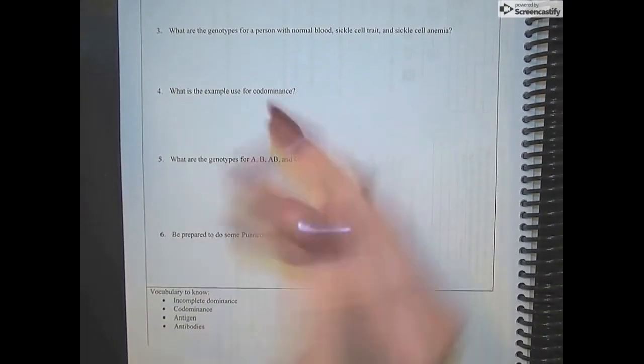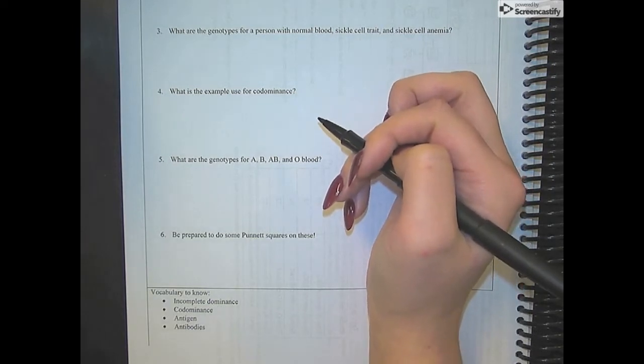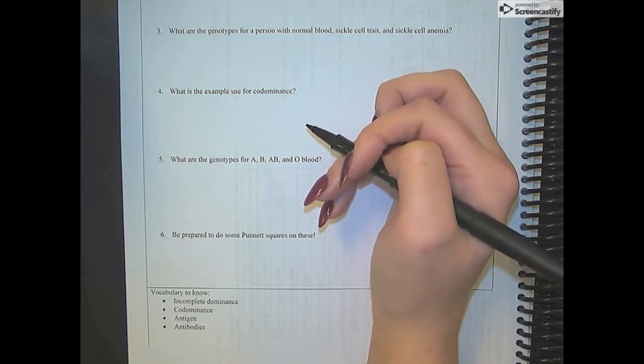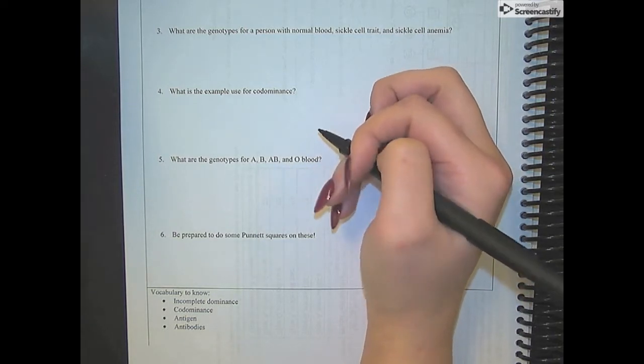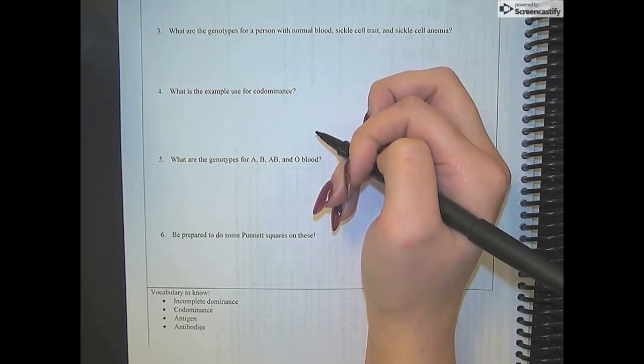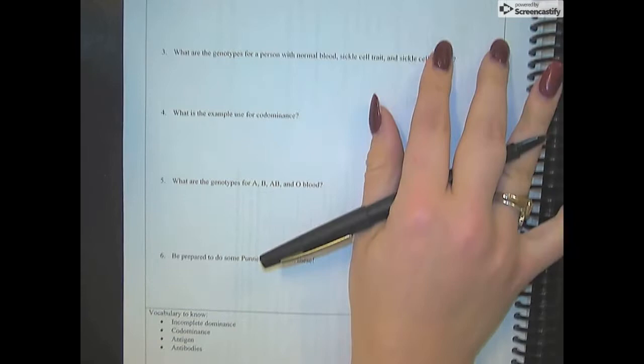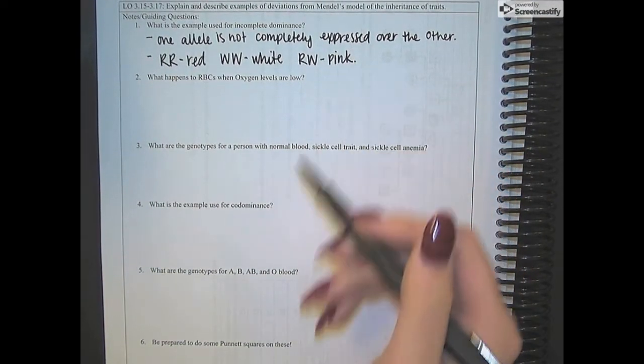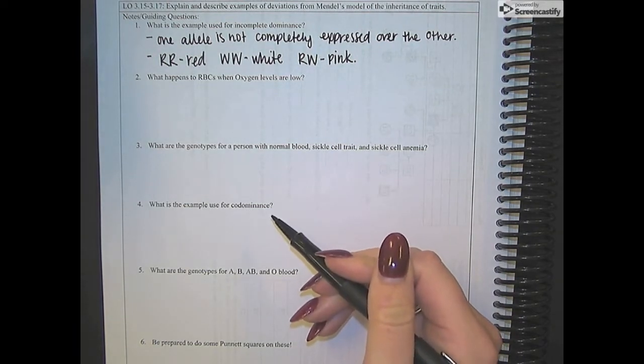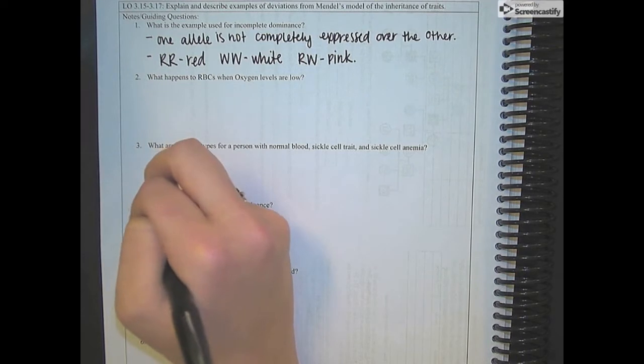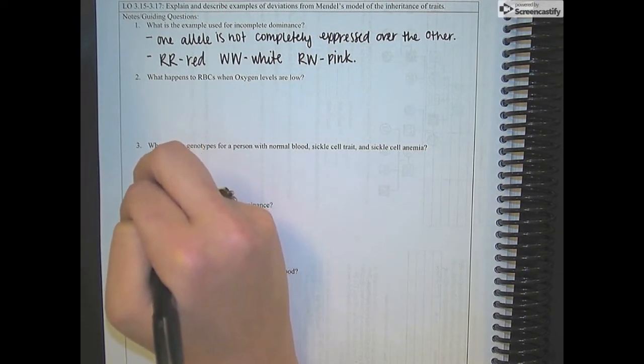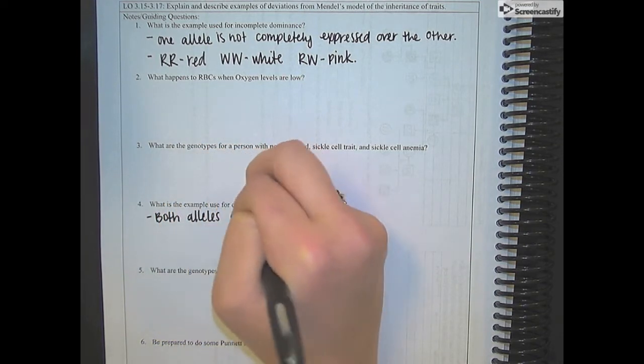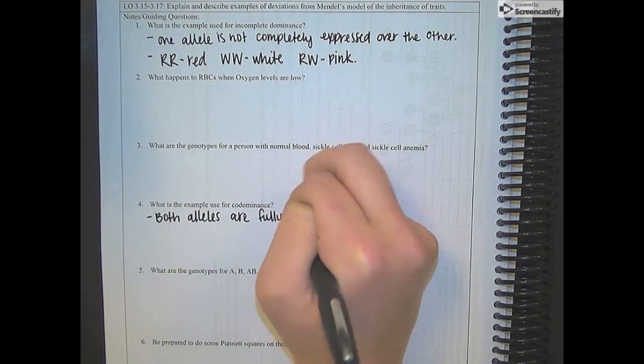But on number four, I'll go over codominance with you guys. So codominance is another one of those inheritance patterns that differs from Mendelian genetics in the fact that both of the alleles would be fully expressed. So in incomplete dominance, neither of them are completely expressed over the other. But in codominance, they're both going to be fully expressed.